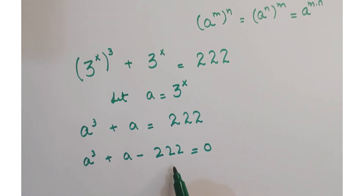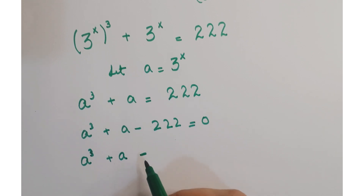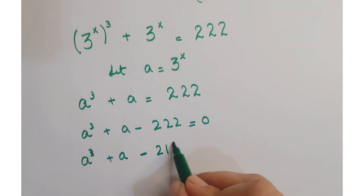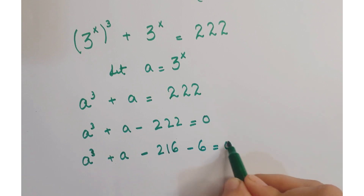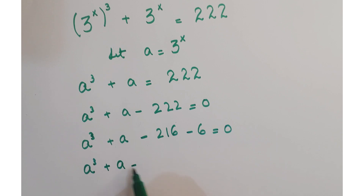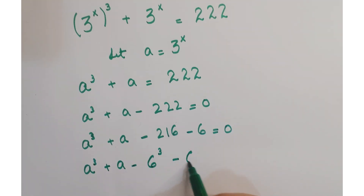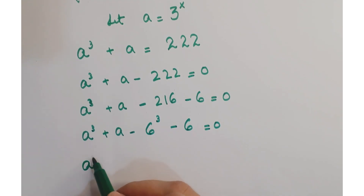Further, take 222 to the left hand side so its sign gets changed. This is a cubic equation, so we'll split 222 in such a form that one number is a cube and the other is its cube root. We can write it as 216 plus 6, since 216 is a cube of 6, giving a cube minus 6 cube plus a minus 6 is equals to 0.